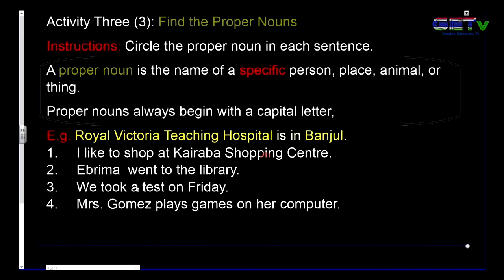Take note of the reminder: a proper noun is the name of a specific person, place, or thing. Proper nouns always begin with a capital letter. Example: 'Royal Victoria Teaching Hospital is in Banjul.' Royal Victoria Teaching Hospital is a name of a particular hospital, and Banjul is a name of a particular city. So these are the two proper nouns in this sentence.